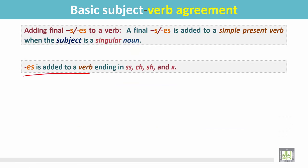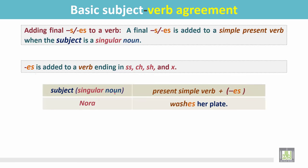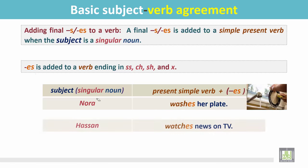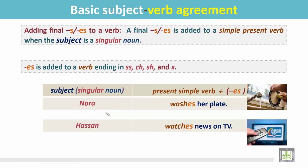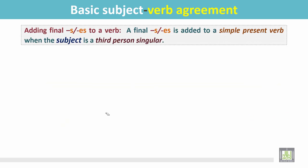ES is added to a verb ending in double S, CH, SH, and X. See the examples: Nora is a singular noun and the verb 'wash' ends in SH, so we add ES — Nora washes her plate. Hassan is a singular noun and the verb 'watch' ends in CH, so we add ES — Hassan watches news on TV.